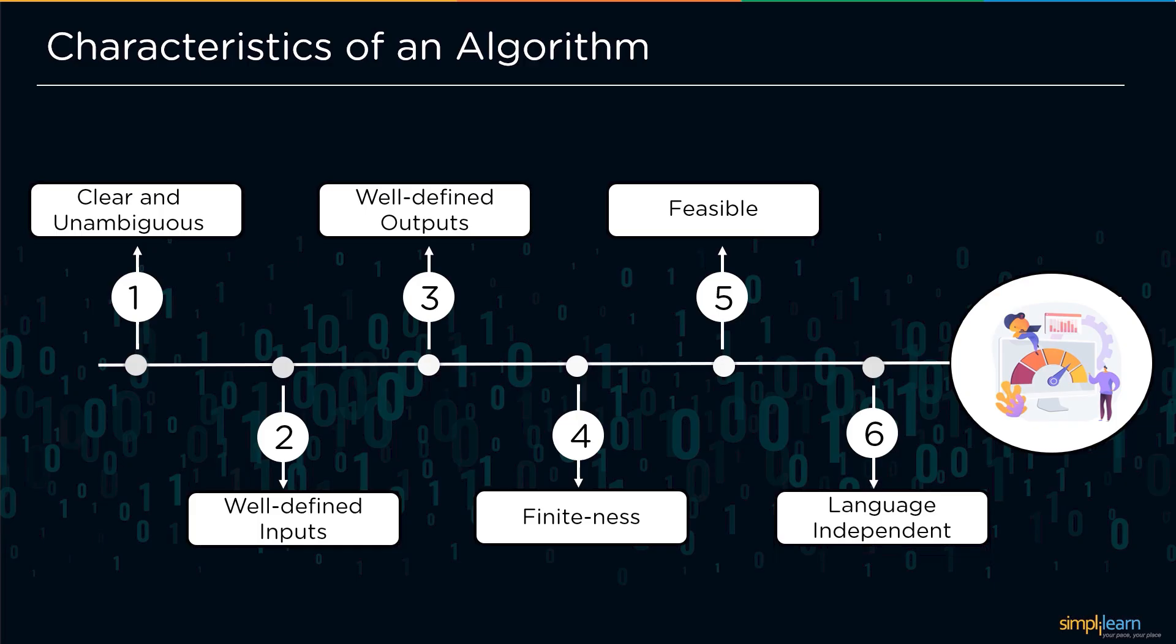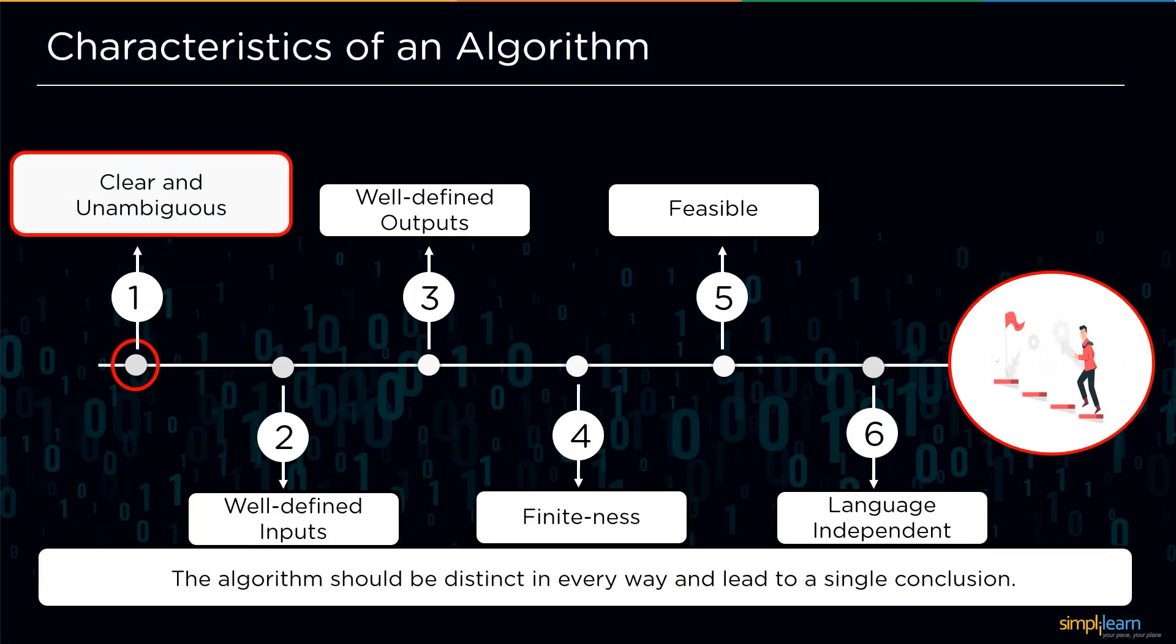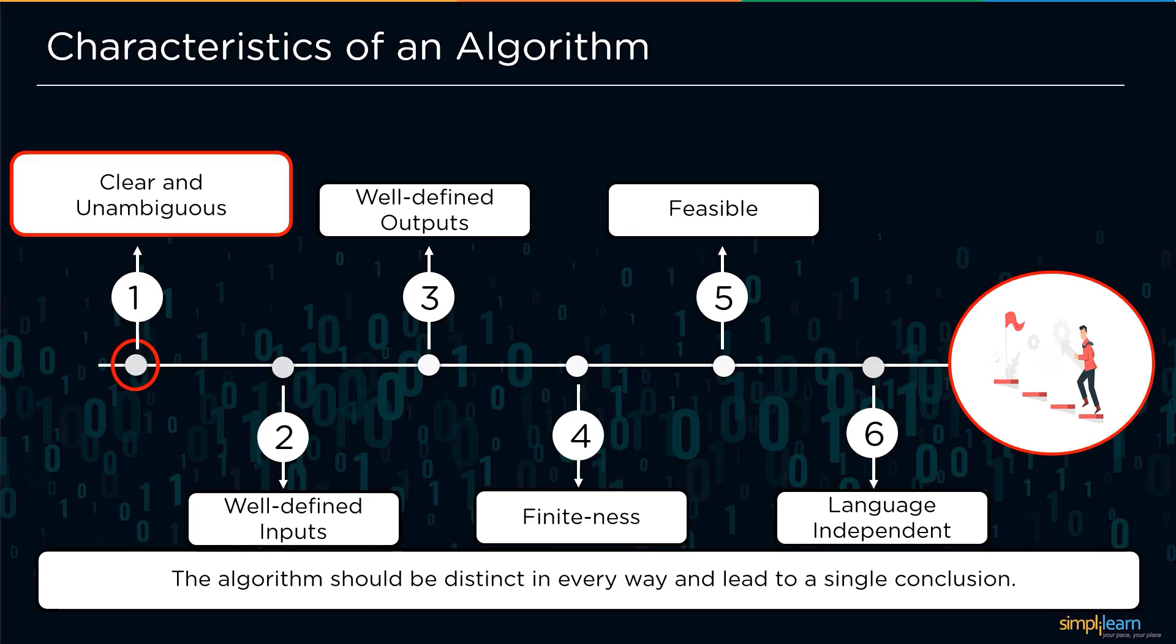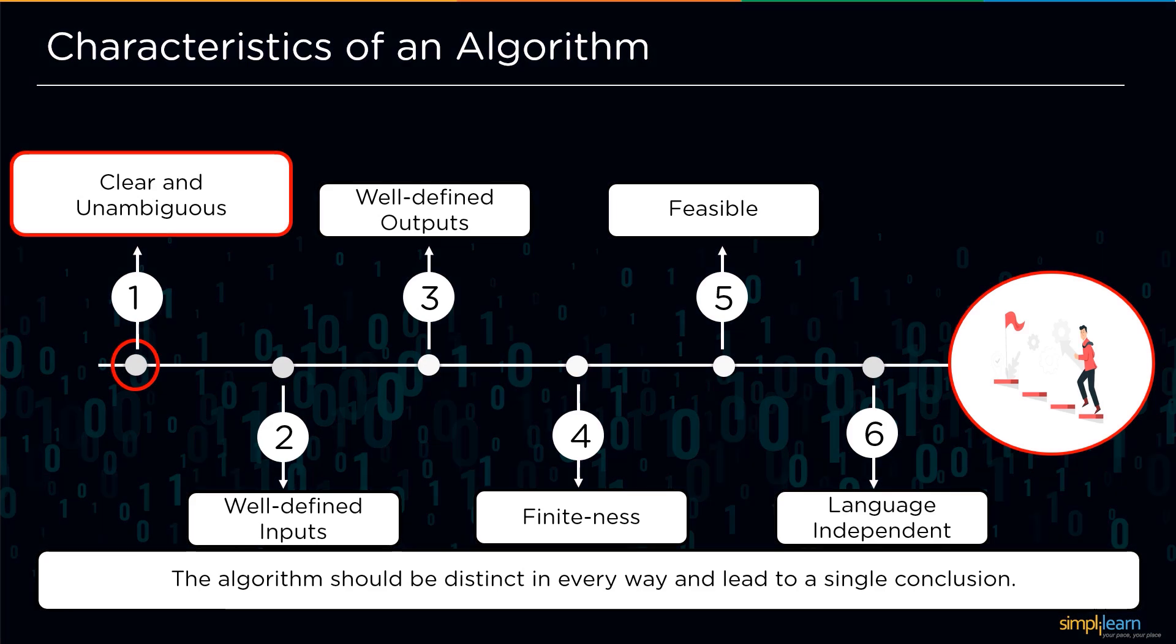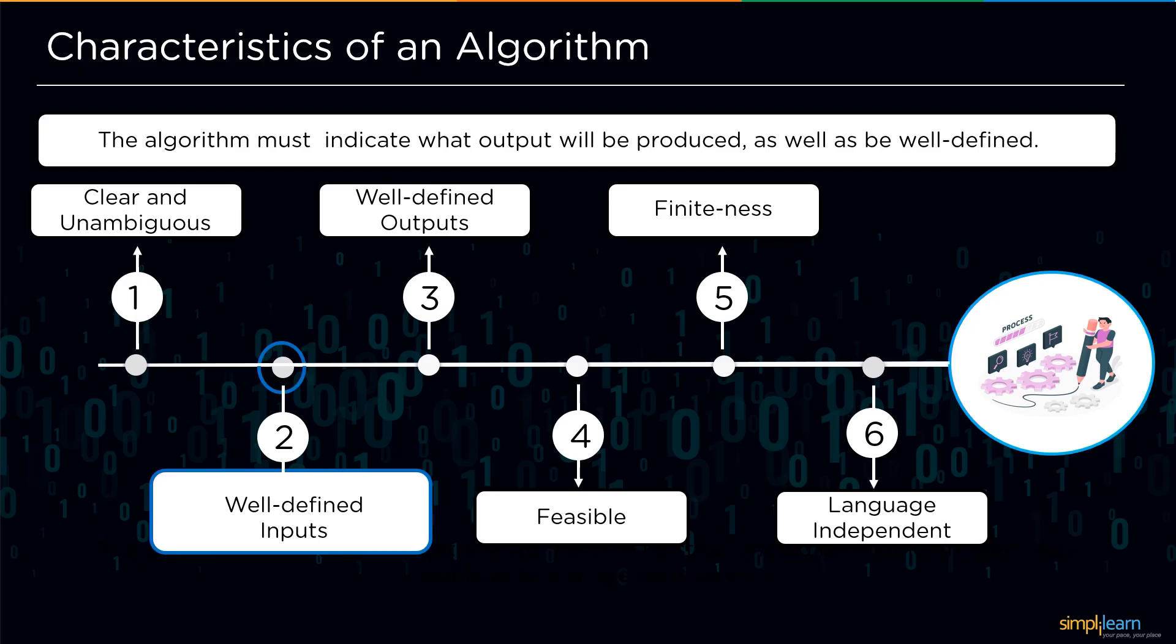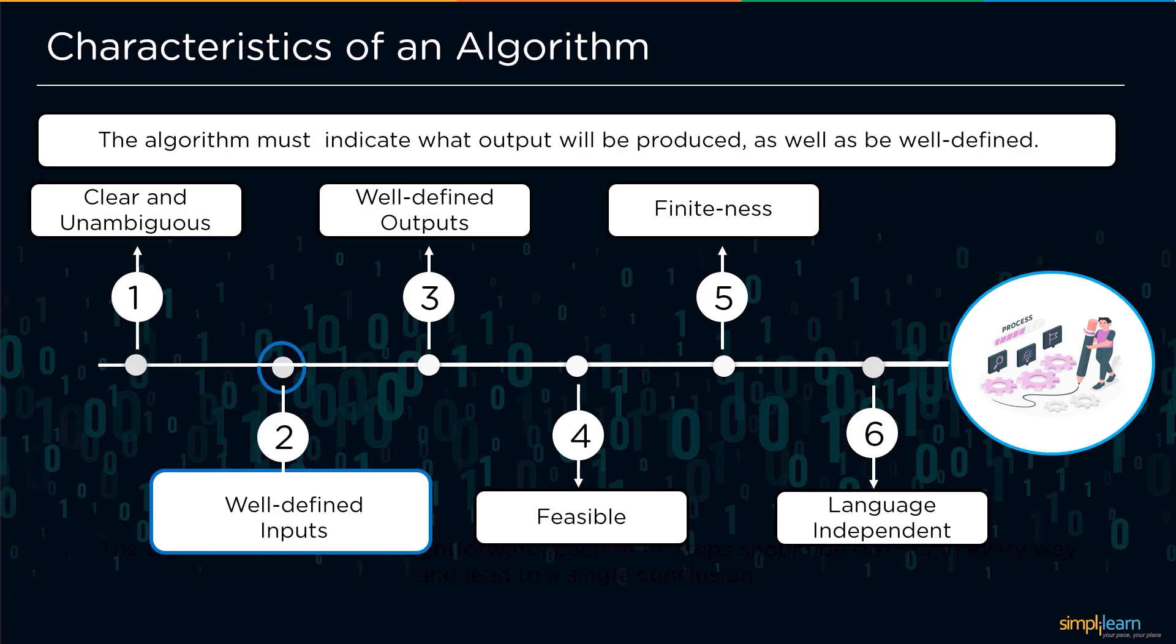Now we will look into each one of the characteristics in detail. First we have clear and unambiguous - the algorithm should be straightforward, simple and easily readable. Each one of its steps should be distinct in every way and lead to a single conclusion. Next, it should have well-defined inputs. This means that an algorithm should indicate what input can be expected and the input should be properly well-defined.